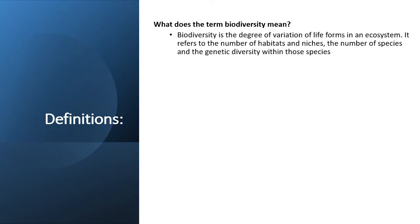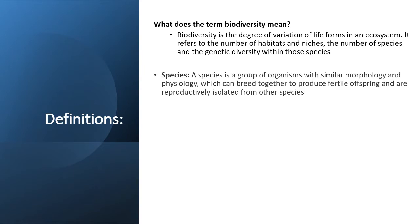First things first is biodiversity. When students define biodiversity, they tend to just say biodiversity is the degree of variation of life forms in an ecosystem, which is correct. But you also need to go a little bit further and refer to the number of habitats and niches, the number of species, and the genetic diversity within those species.